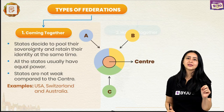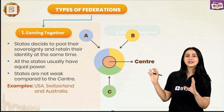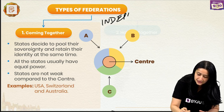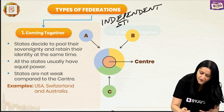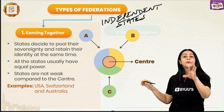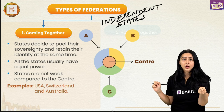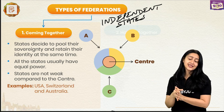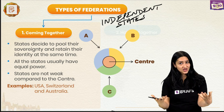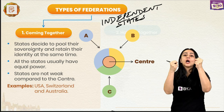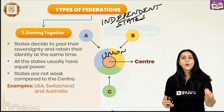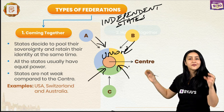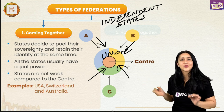Let's start with the coming together Federation. If you observe the diagram on screen, you can see that A, B and C are three independent sovereign states. Let us assume that each of these states is under the fear of being annexed, colonized, or attacked by a bigger and stronger country. What could they do? They could strategize and come together to form a union so that they are less vulnerable to attacks. When they pull all their forces together, the federation thus formed would be a coming together federation.